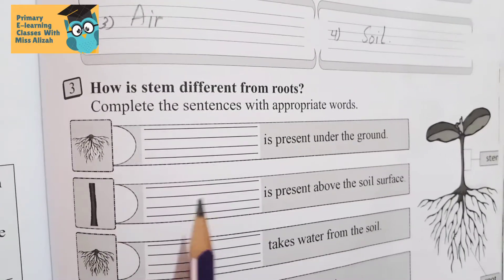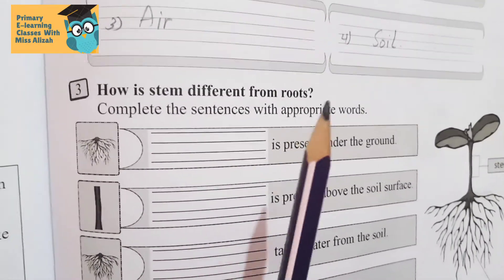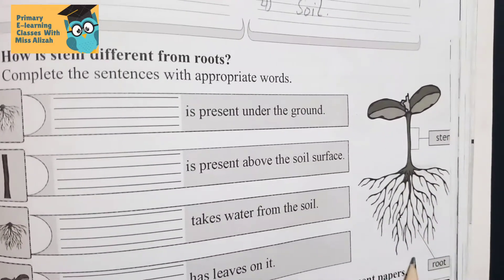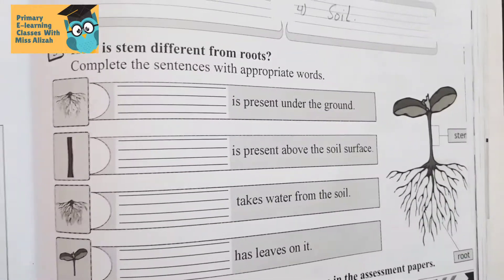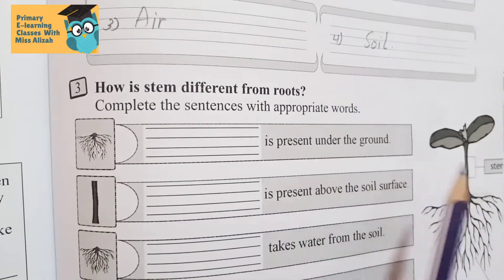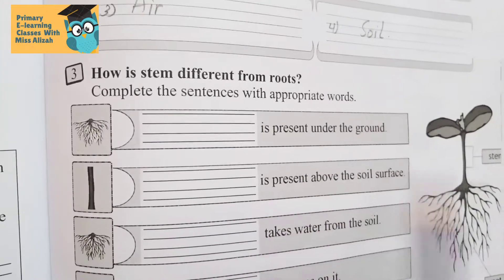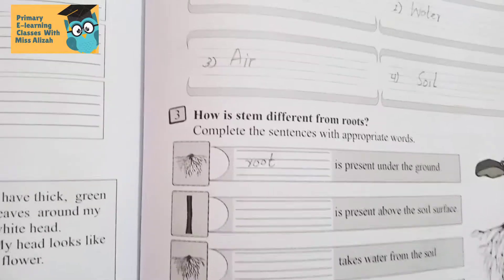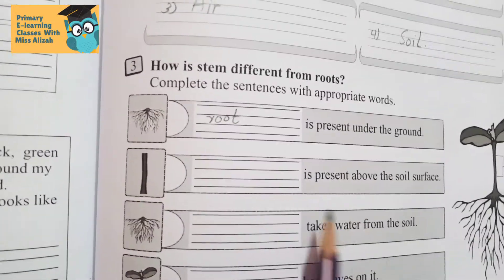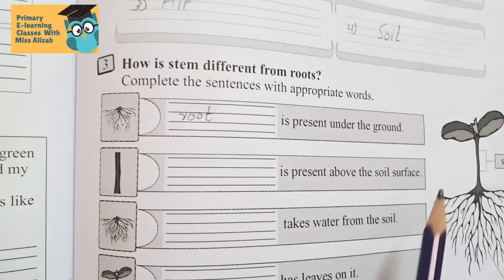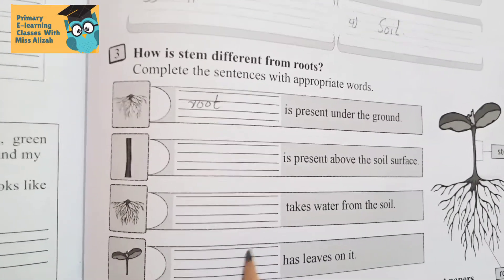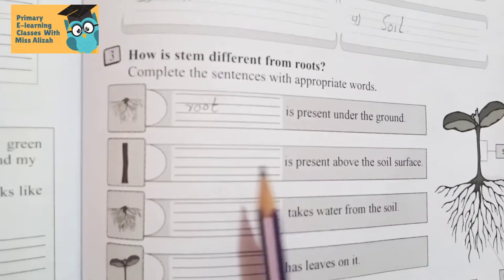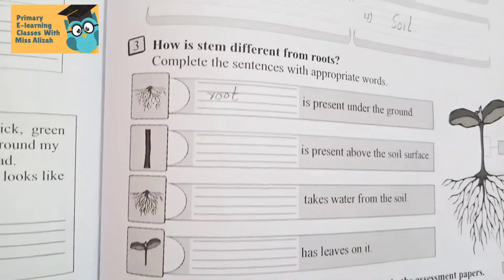The first blank: is the stem present under the ground or are the roots? Obviously, roots are present under the ground. So: root is present under the ground. Next: what is present above the soil surface — stem or roots? Obviously, stem is present above the soil surface.